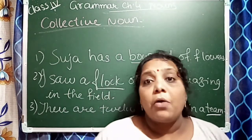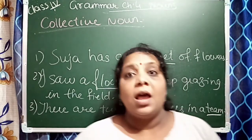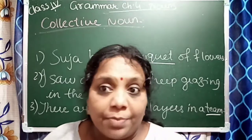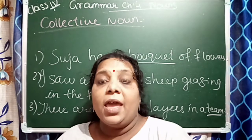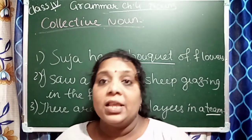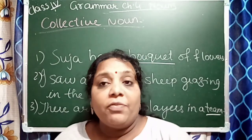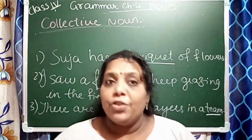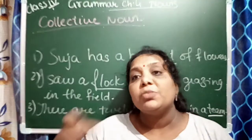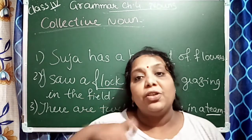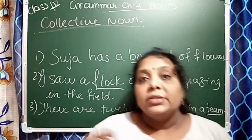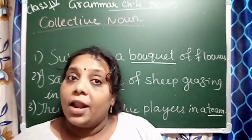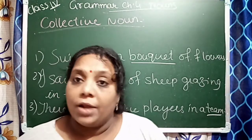The names of the groups of people, animals, and things taken as one unit are called collective nouns. For example — people: a crowd of people; animals: a herd of cows, a flock of sheep; things: a bunch of keys, a bunch of bananas, a bouquet of flowers.